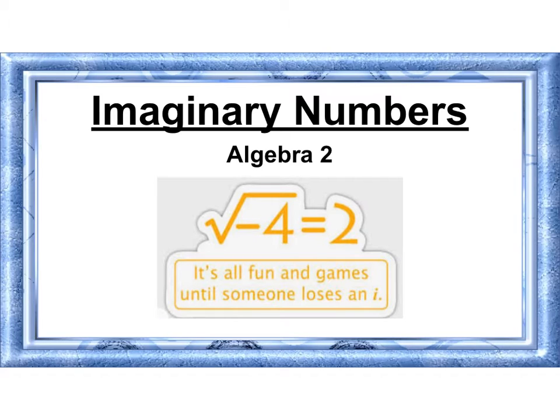Let's learn about imaginary numbers. Here we have the square root of negative 4 equals 2. It says it's all fun and games until someone loses an i. Hopefully by the end we'll figure out what that joke means.